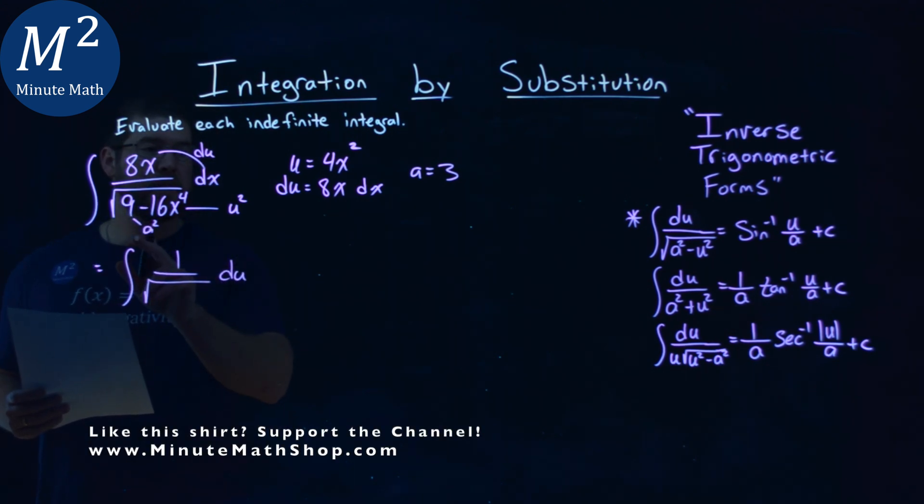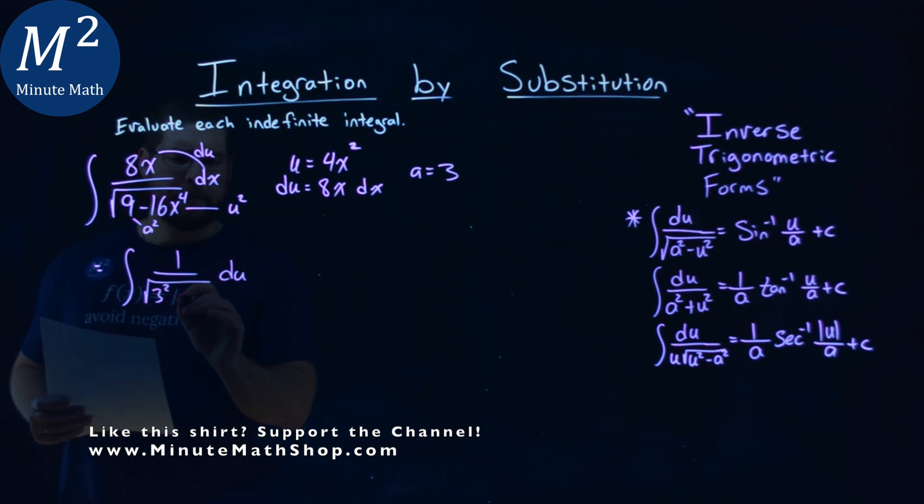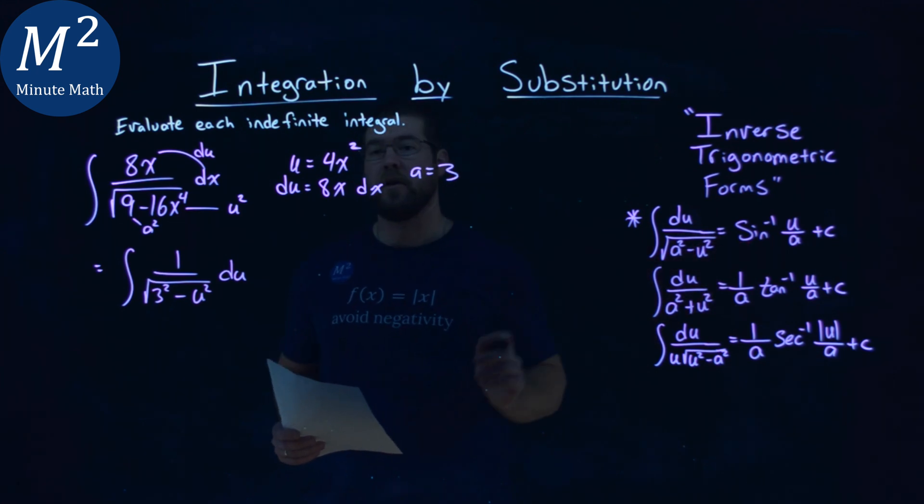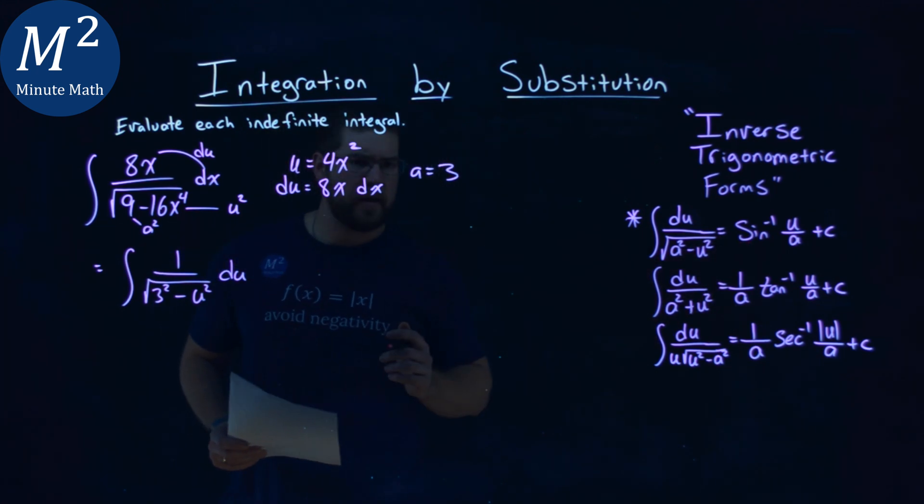Well, a squared is 9, so let's write that 3 squared, a little easier to see, minus my u value squared is that 16x to the 4th. So let's write it as u squared. And now we can see it basically lines up with our arc sine definition. So let's apply that.